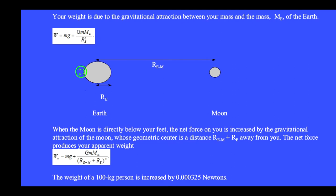When the Moon is directly below your feet, the net force on you is increased by the gravitational attraction of the Moon, whose geometric center is the distance R sub eM plus the radius of the Earth away from you. The net force produces your apparent weight: m times g plus G times M_M over (R_EM plus R_E) squared. The weight of a 100 kg person is increased by 0.0003 newtons.